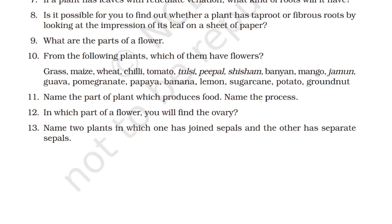Name the part of the plant which produces food and name the process. The leaf is responsible for producing food for the plant. The process is called photosynthesis. So leaves produce food for the plant through the process known as photosynthesis.